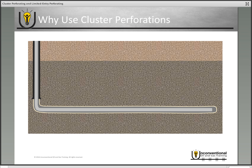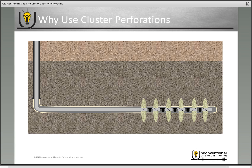Some may wonder why we use cluster perforations at all. It is possible to use pinpoint or single-entry fracturing with plug-and-perf — you fire one set of perforations, fracture, set a plug, and repeat. However, with plug-and-perf there is downtime between each stage: you rig up wireline, run your plug, fire perforations, pull out of hole, rig down wireline, rig up the fracturing crew, perform the fracture, then repeat. That additional downtime between stages is the key driver behind cluster perforations — efficiency.